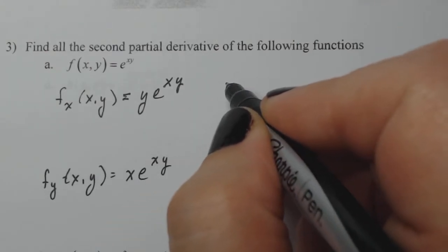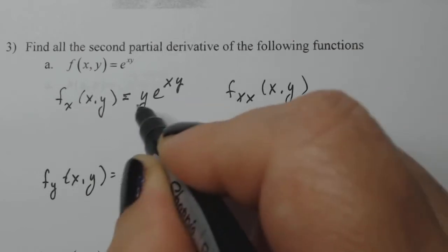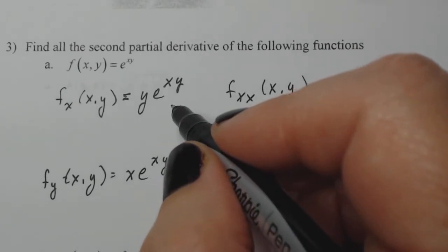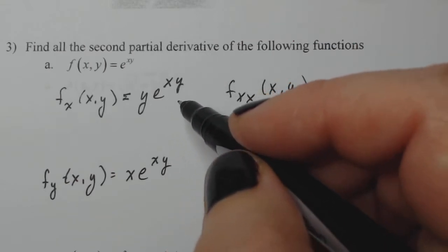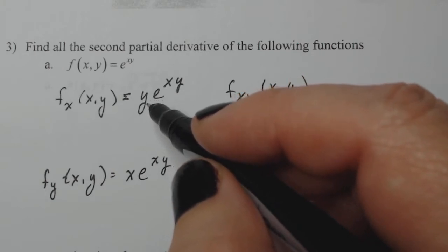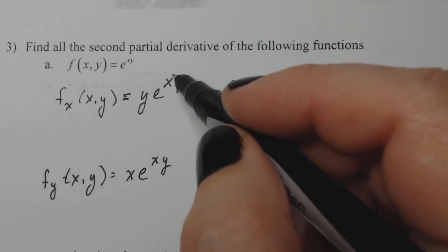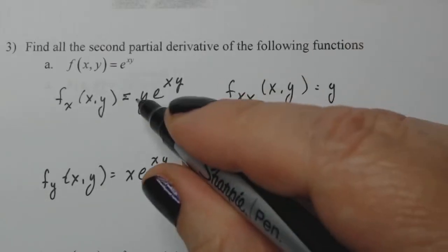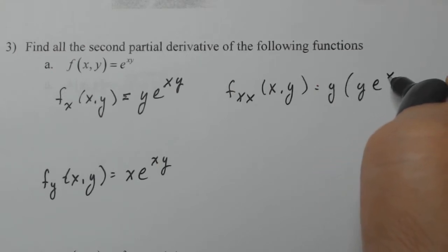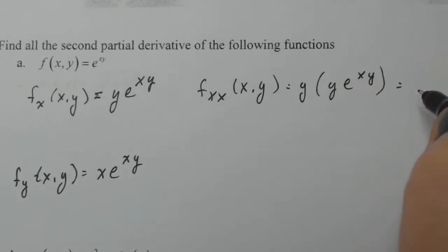If I want to do f sub xx, that means I have to take f sub x and take the derivative of it with respect to x again. So y is a constant. I take the derivative of y e to the xy with respect to x — the derivative of e to the xy with respect to x gives y. So this becomes y times y e to the xy, which ends up being y squared e to the xy.